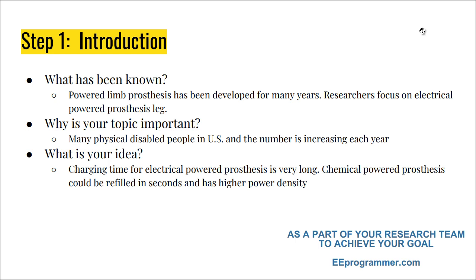The next question is: Why is your topic important? Because there are many physically disabled people in the US and around the world, and the number is increasing every year. The next question is: What is your idea? Since we want to make a chemical-powered prosthesis, we want to find out its advantages — for example, the charging time for electrical prostheses is very long, whereas a chemical prosthesis can be refueled within a few seconds and has a higher power density.